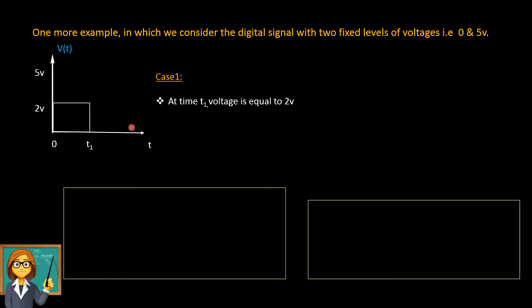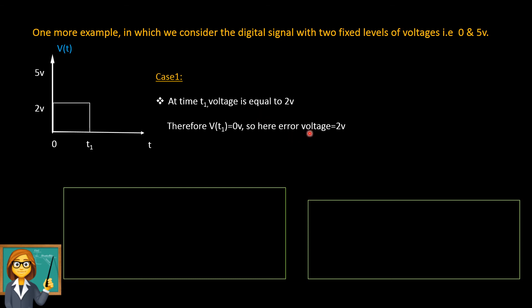In this case, the fixed levels are 0V and 5V. If my actual input signal at T1 is 2 volts, the digital signal must reduce it to either 0V or 5V. Following our rule of rounding to the lowest value, V(T1) = 0 volts. But an error has occurred — the actual input was 2 volts, yet the digital signal shows 0 volts. This difference is the error voltage, which equals 2 volts.